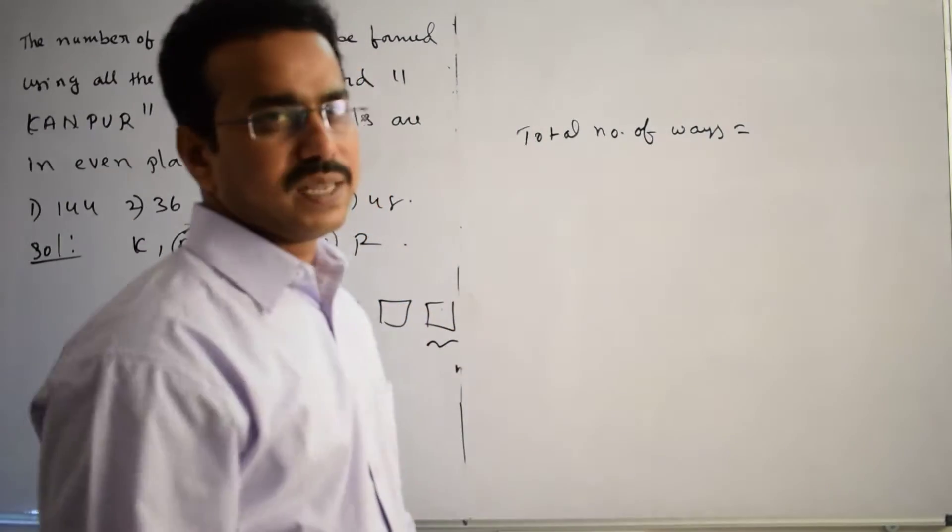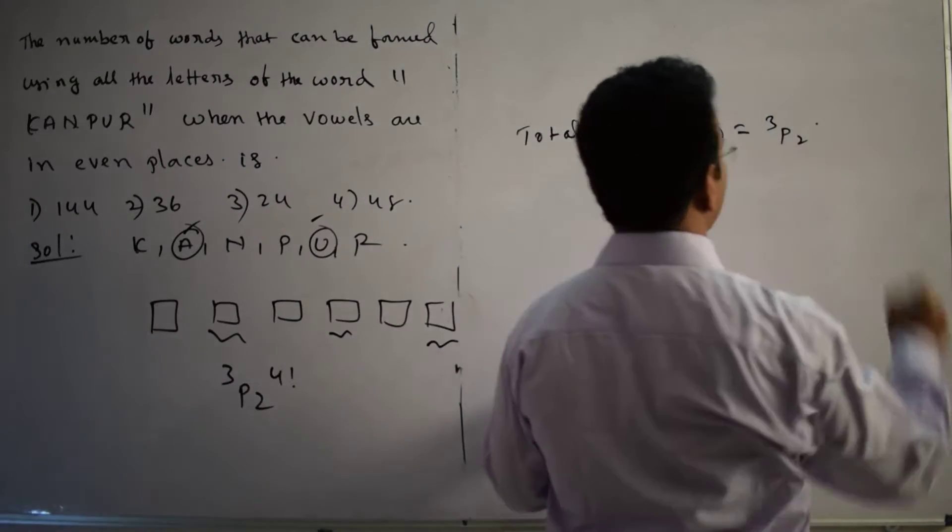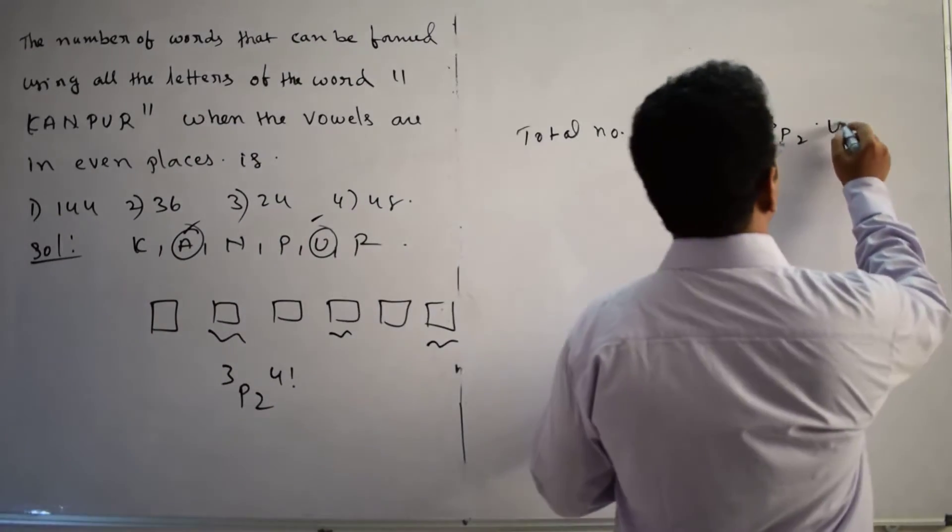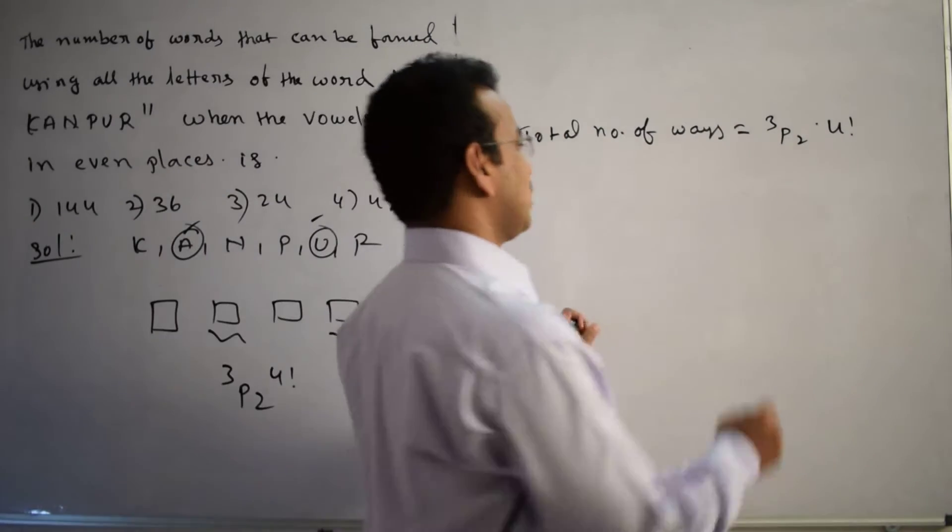So 2 vowels are there, 3P2 ways I can fill. Now rest of the boxes, 4 boxes are there, 4 letters are there. So 4 factorial ways I can fill. So total number of ways equals to, using the formula, 3P2 into 4 factorial.